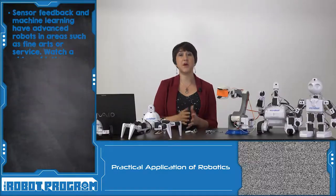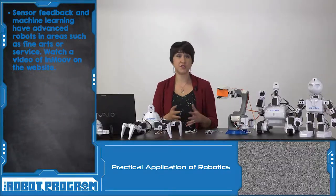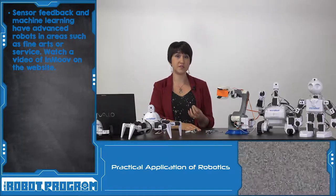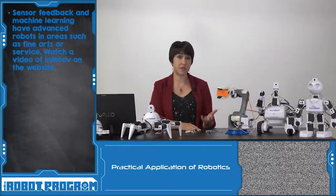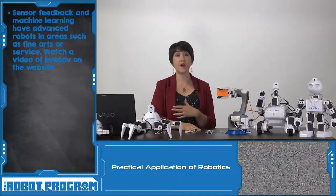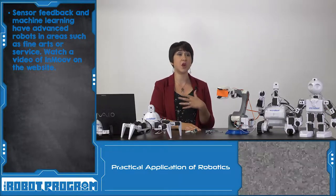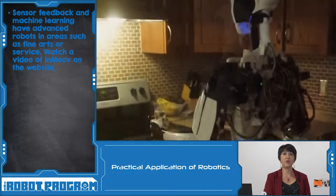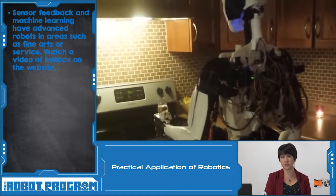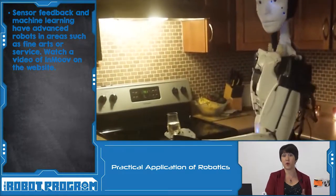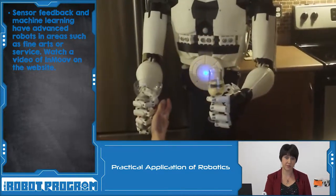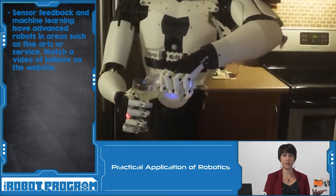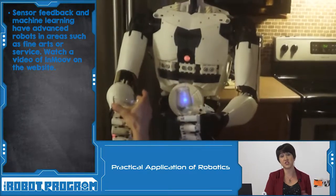Modern robotics can also be used in fine arts or service. Using sensory feedback and control systems we can have robotic musicians. We can have robotic artists as they use artificial intelligence to learn about different patterns and art. We even see robots in the service industry — something like the InMove robot demonstrated in previous episodes is able to pour a glass of wine for a human who maybe can't get up and get to the kitchen themselves.